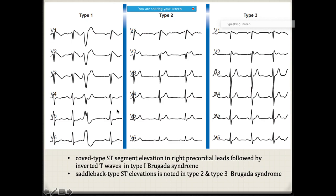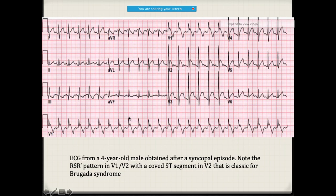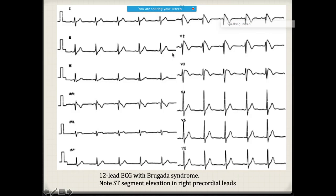There are three types of Brugada. In type 1, you see what is called the coved-type ST segment elevation in the right-sided precordial leads. In types 2 and 3, rather than coving, there is a saddleback pattern. A young patient's ECG showed coving of the ST segment, which is classical for Brugada syndrome.